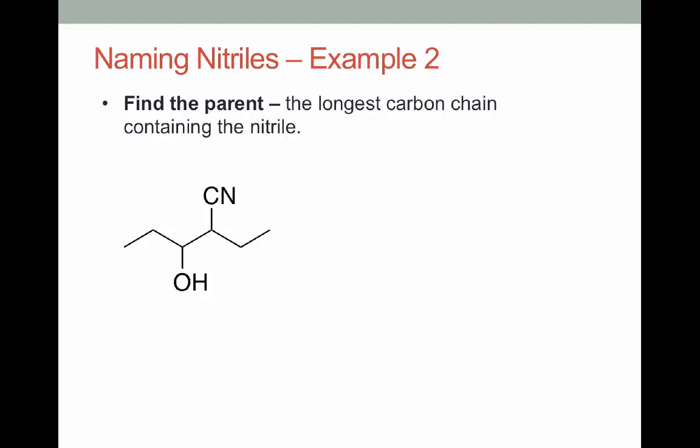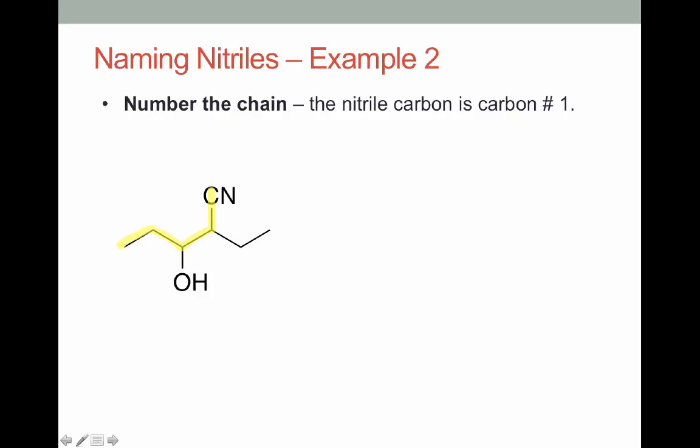Our second example is a little more complex. And this time instead of drawing out the nitrile functional group, I just abbreviated it as a CN. But again, our parent chain contains this nitrile carbon. And our longest carbon chain is this. From here we can number our chain. Nitrile carbon's 1. We end up with a 5 carbon chain.